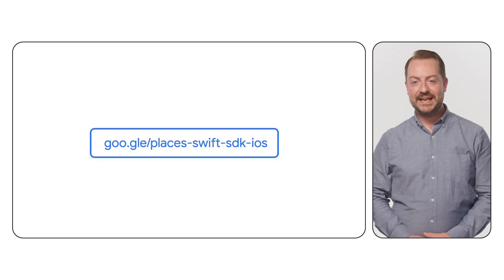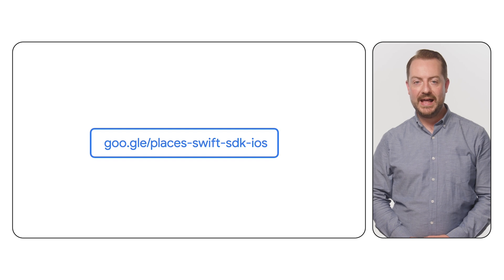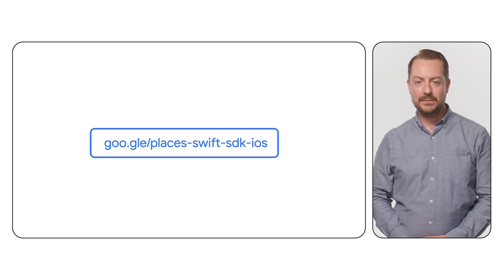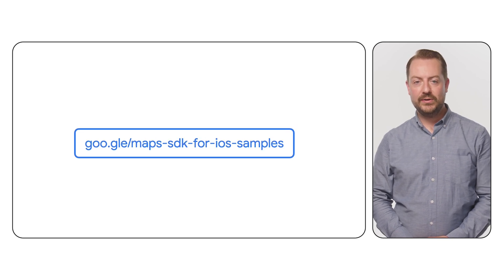The iOS Places SDK is available for use with both Swift and Objective-C, so whichever language you use, we've got you covered. We also have a Swift-first version of the SDK available in preview right now — follow the link in the description to check it out. Also, be sure to take a look at the code and demos available on the Google Maps Samples GitHub page for more tips and tricks in using the SDK. Follow the link in the description to learn more. Now you know how to use Places new in your application — check out the link in the description below to see the documentation, and we can't wait to see what you build. Happy mapping!